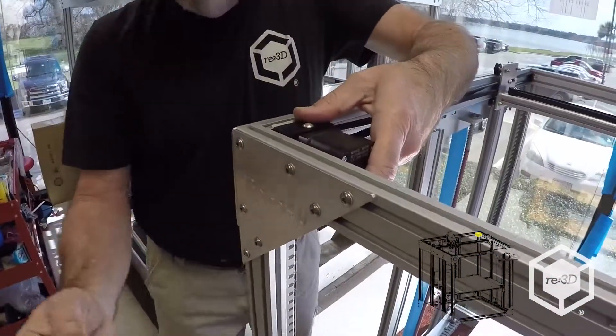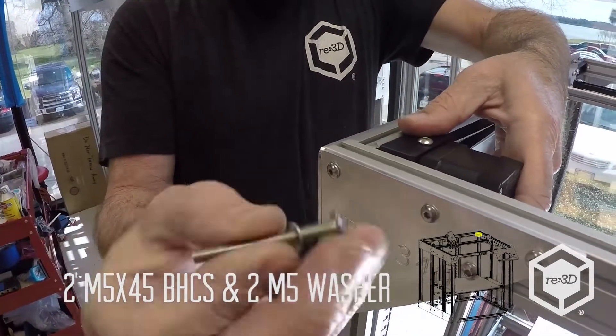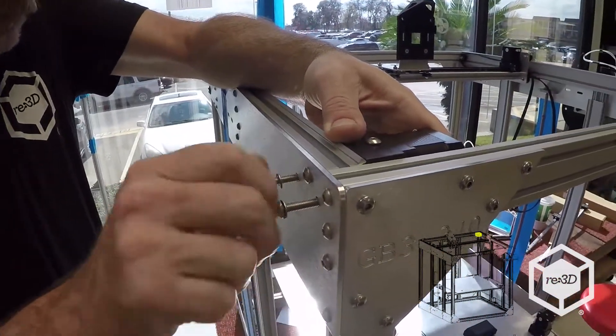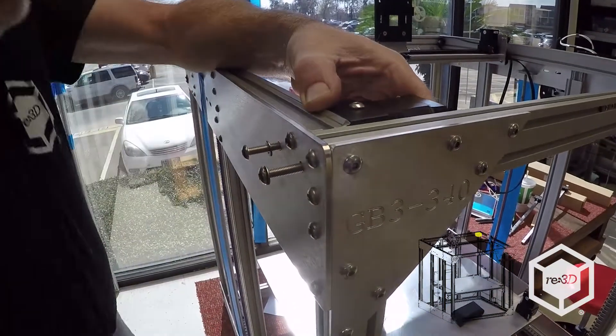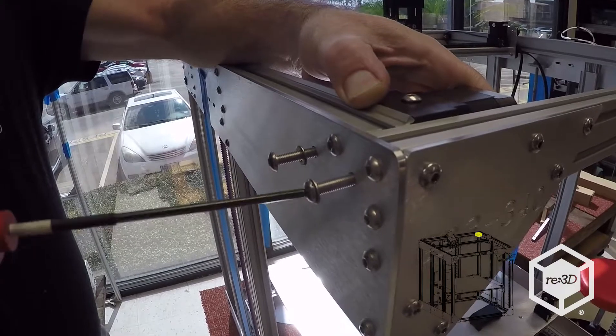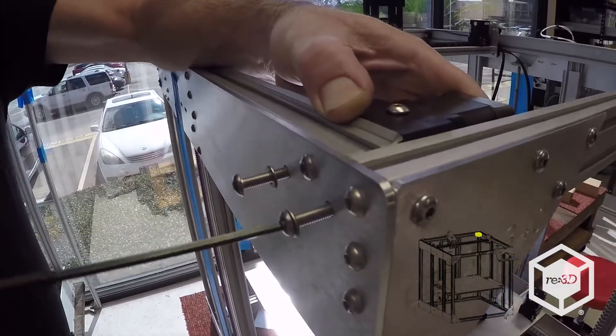And you've got the M5x45 with a washer. And since you're threading into plastic, you don't want to over tighten these.